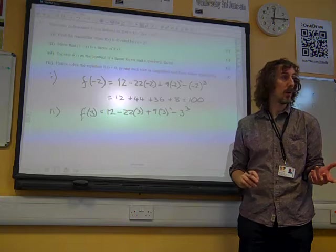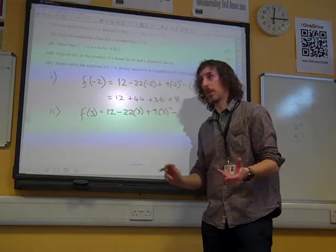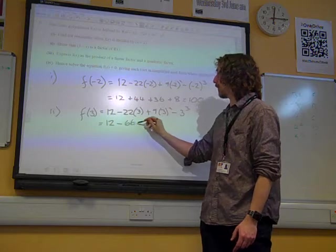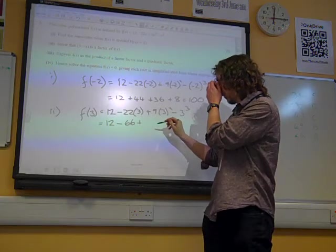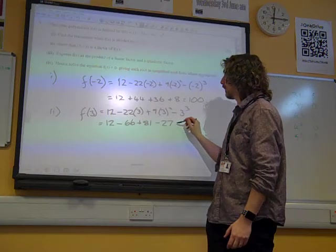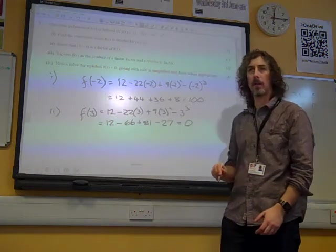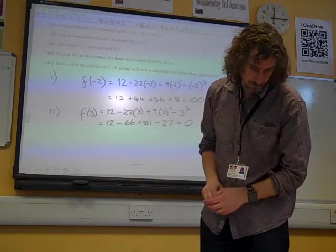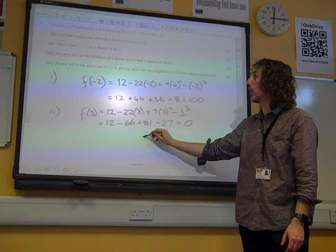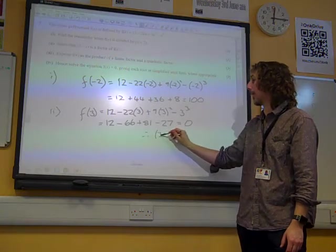but we do have to properly show that we're getting an answer of 0 and we know what that means. So that's 12 minus 66 plus 81, minus 27. And that does equal 0. And we need to kind of show that. And we ought to probably say, therefore, 3 minus x is a factor.